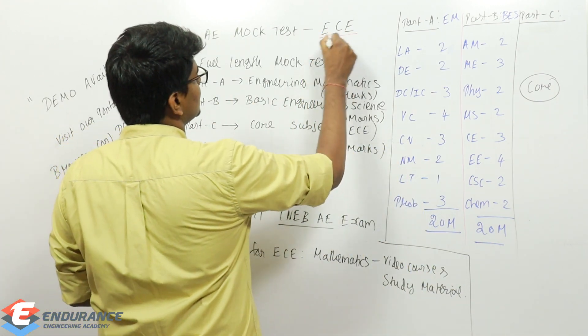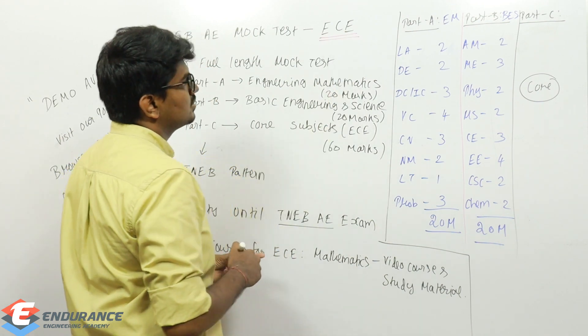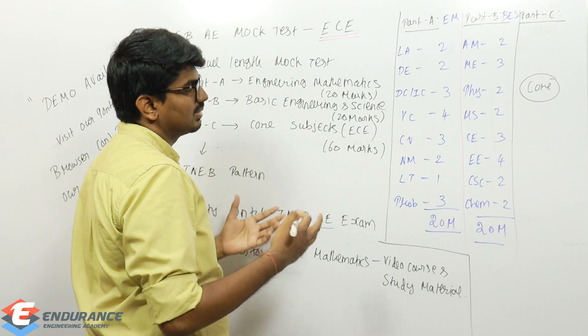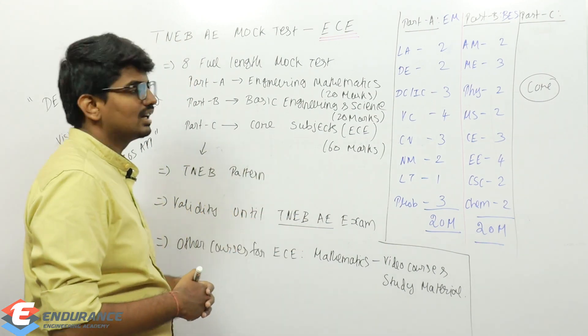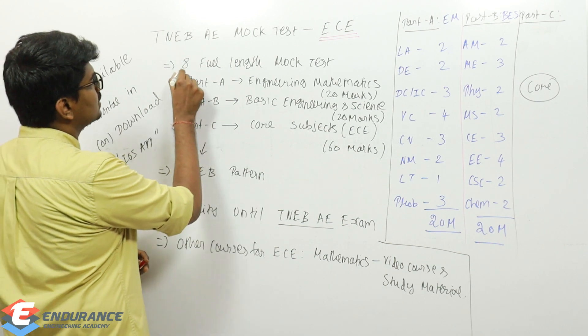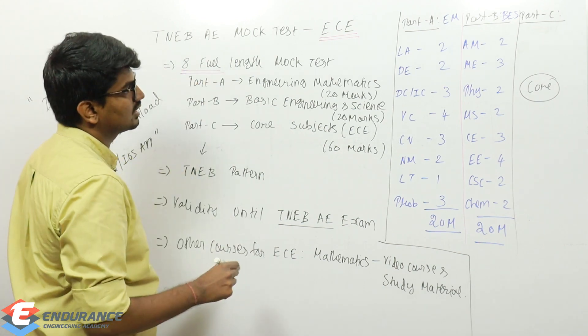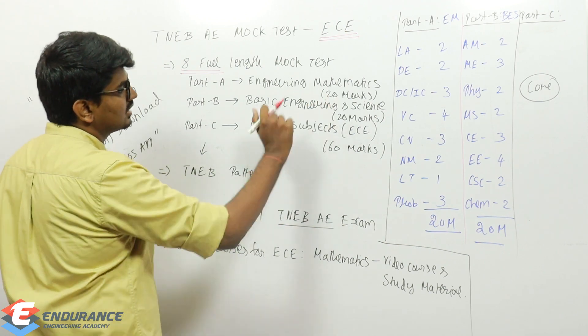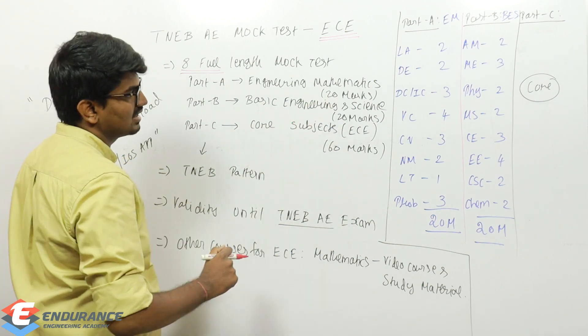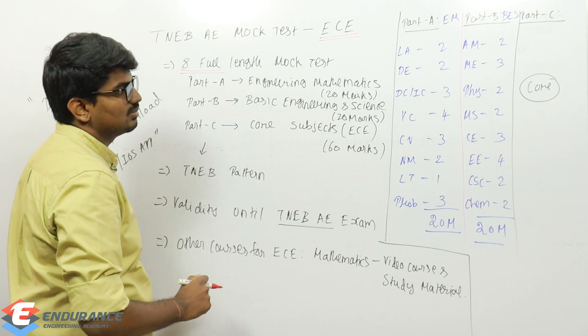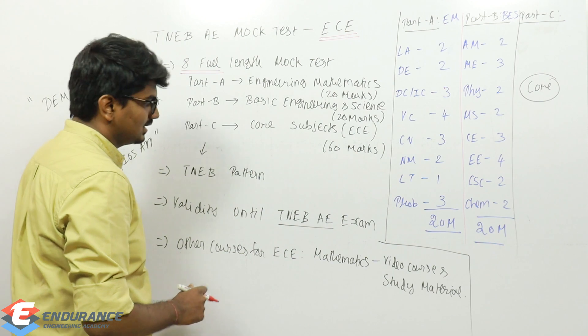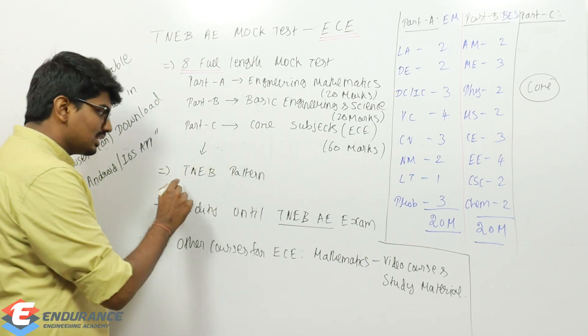Regarding mark distribution, the test series will have eight full-length mock tests. It will be exactly as TNEB pattern: 20 marks for mathematics, 20 marks for basic engineering science, 60 marks from core subjects. For ECE, the core subjects will be from ECE syllabus.